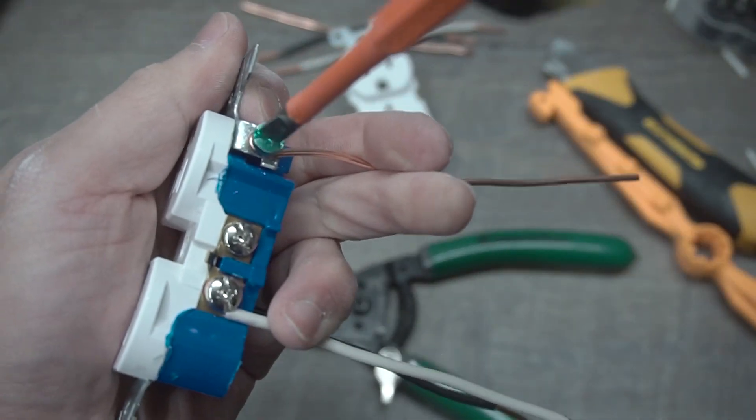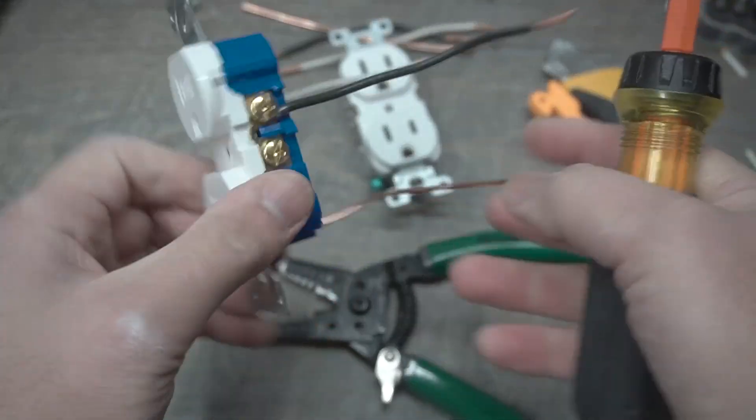Okay, you don't want anything that's sticking out, especially if you're going to be using a metal j-box. You don't want these things flopping around. Lastly, tighten down your ground wire. That is done. We can put that aside.